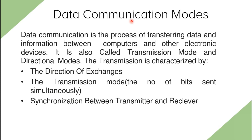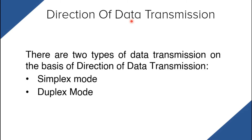Now let's head into data communication modes. Data communication is the process of transferring data and information between computers and other electronic devices, also called transmission mode or directional mode. Transmission types are characterized on the basis of the direction of exchange, the number of bits sent simultaneously, or the synchronization between transmitter and receiver. We are now going to learn about categorization based on direction of data transmission.